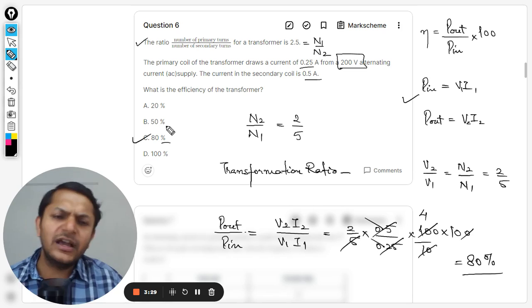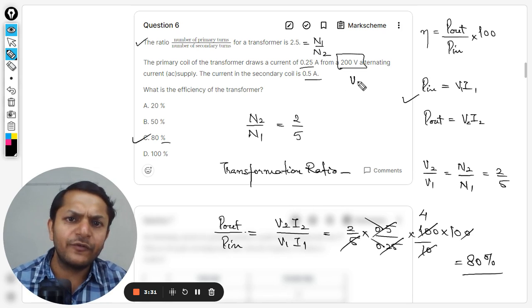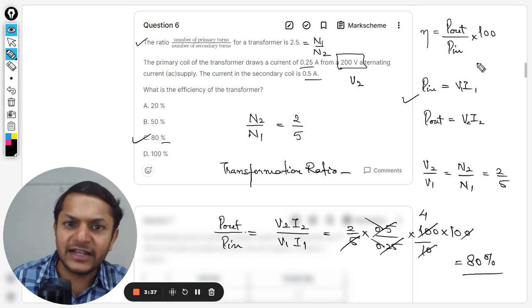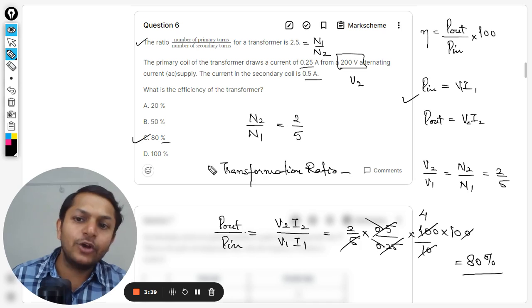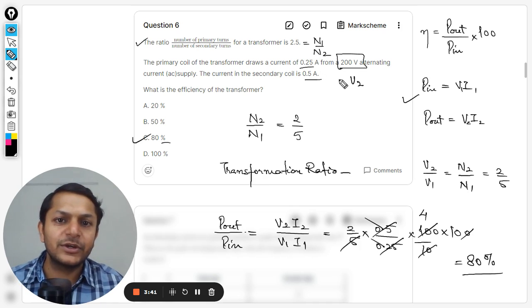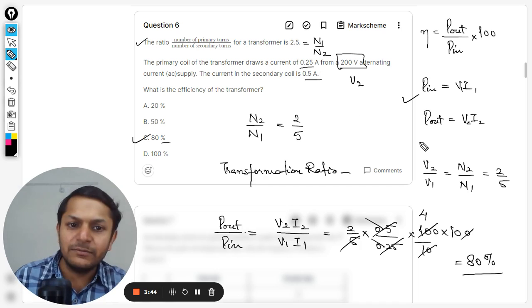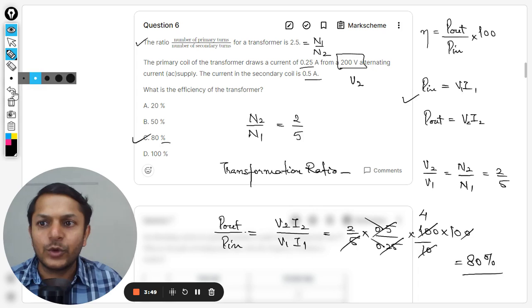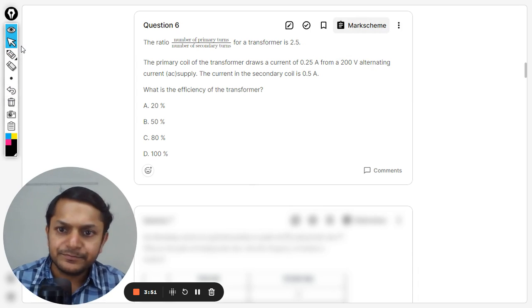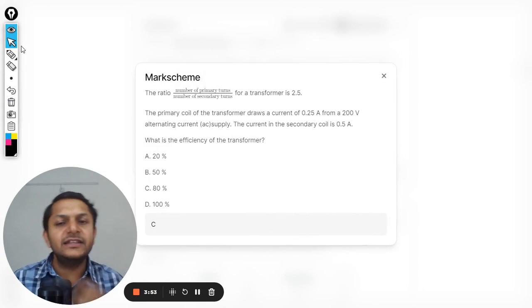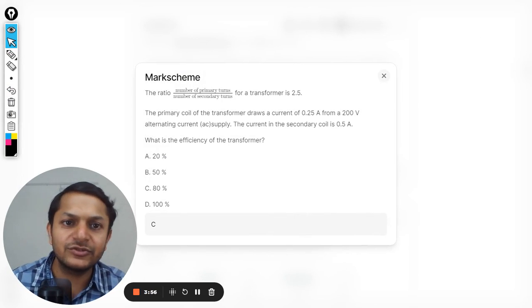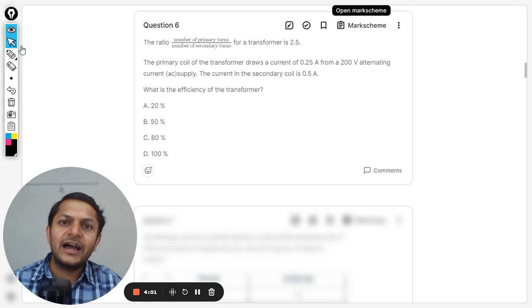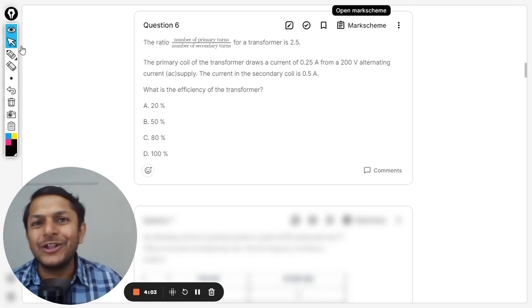Definitely the answer should be C, and this is how we do it. If there is any other easy method, you can find the value of v2 and then apply this. Obviously the efficiency is not 100% because these two values are not actually matching each other. Let us see what is the answer in the mark scheme, and clearly the answer is given as C. So this is how we do this question, my dear students. This is Professor Varun. Thank you for joining, please share the YouTube video with all your friends, and keep joining. All the best, bye.